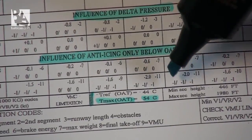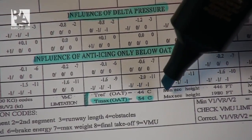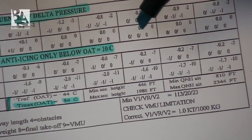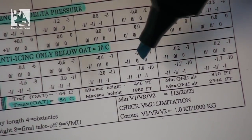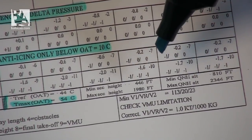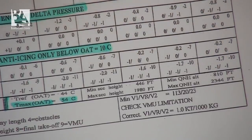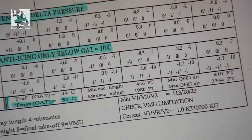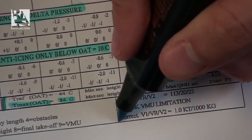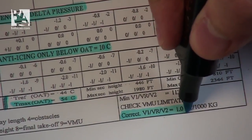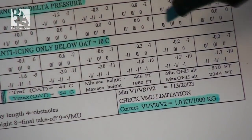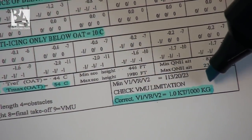There is some more general data here, for example minimum acceleration height and maximum acceleration height, but these would be further determined with the performance charts and airport charts. Finally, if we had a weight less than anything displayed in this chart, we would do a correction for V1, VR, and V2 from the lowest figure we can use of one knot per 1,000 kilograms.